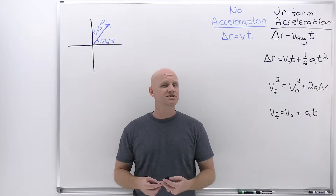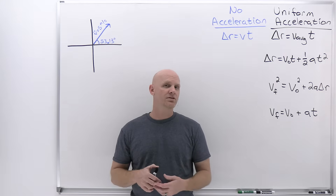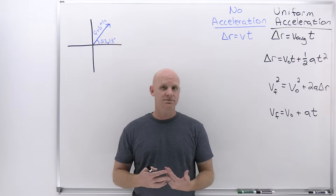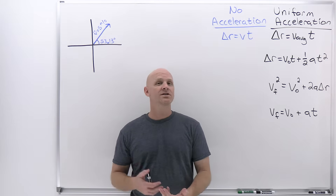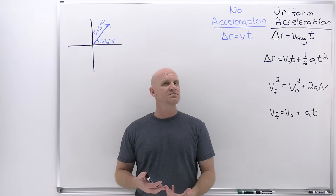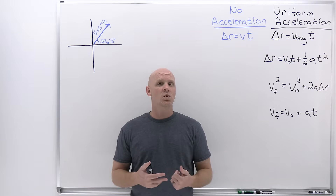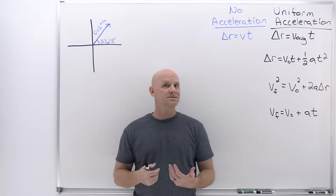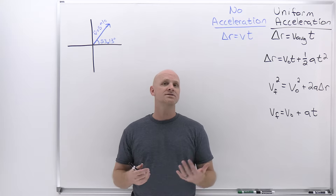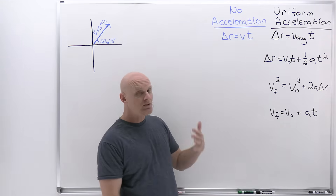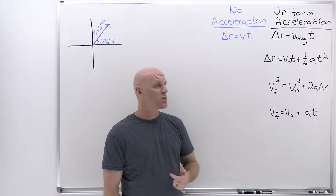Now that we're treating motion in two dimensions, not just one dimension like in the last chapter, we've got to redefine some things. When dealing with motion in one dimension, it's customary to define everything in terms of the X dimension. But now in a two-dimensional world, we're going to be defining it on a Cartesian axis with X and Y. Instead of defining everything in terms of X where displacement was delta X, now we're going to define displacement as delta R, and it can be directed in any direction in our Cartesian coordinate system.